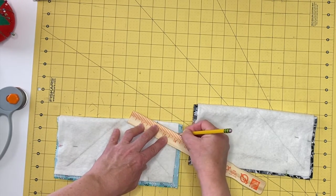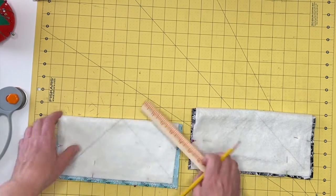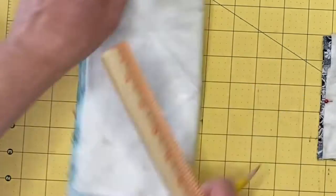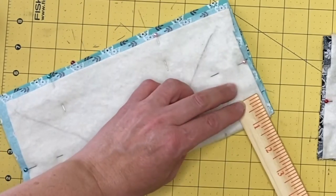Then, connect your two marks with your ruler and light-colored pen. Now, you should have two diagonal lines along the top fold of your fabric.